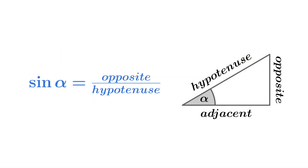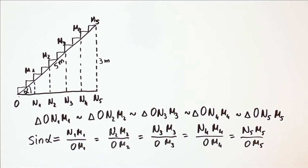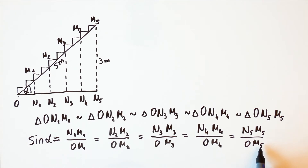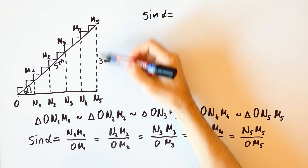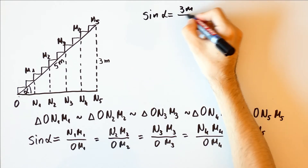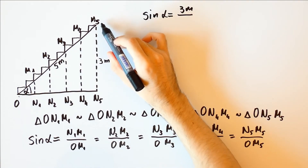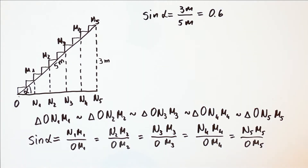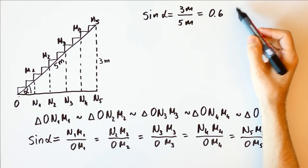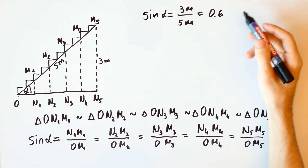Now we can define that if in a right triangle alpha is an acute angle, the sine of alpha is equal to the ratio of the opposite leg to the hypotenuse. So, what is the sine of alpha in our example? The sine of alpha is equal to N5-M5 over O-M5, which is 3 meters over 5 meters, and that is equal to 0.6. Note that the sine of alpha doesn't have any unit — there are no meters, or degrees, or any other unit — it's just a number.